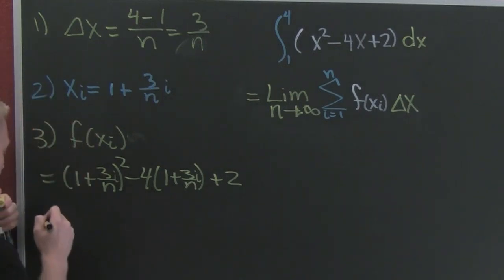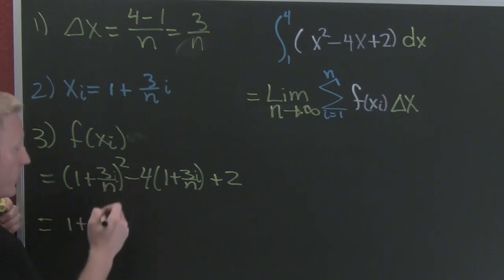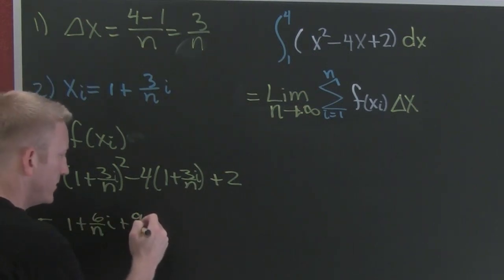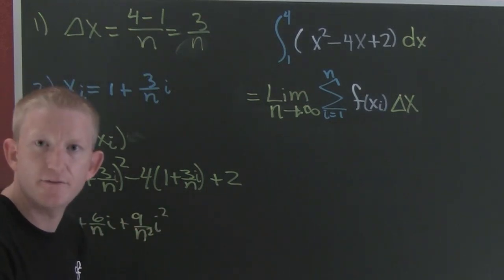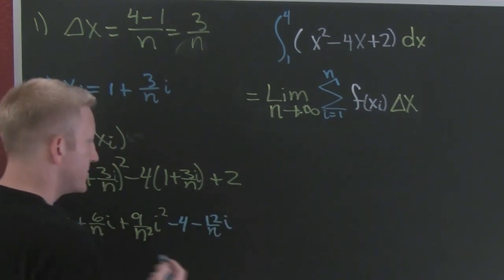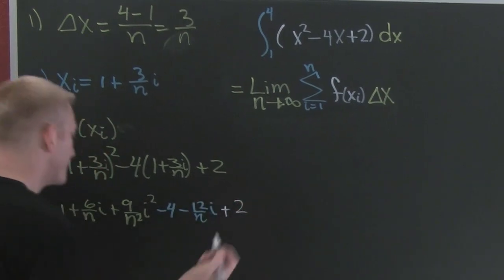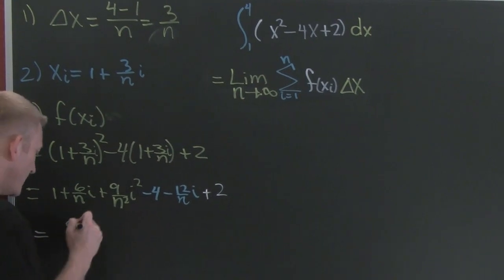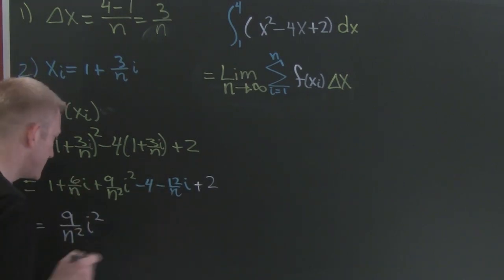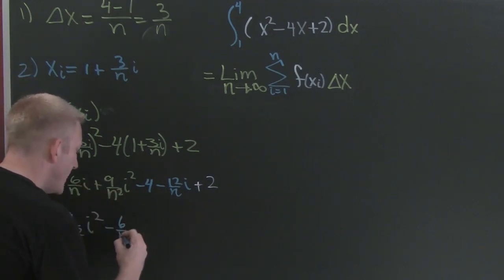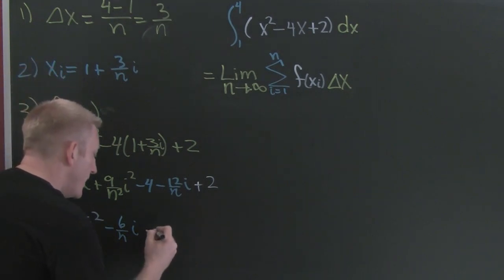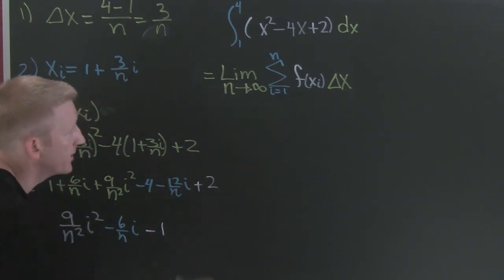Let's clean that up. Expanding the square gives 1 plus 6i/n plus 9i²/n². Now taking care of the 4: that's minus 4 minus 12i/n. Plus 2. Gathering the i² terms, i terms, and constants: we get 9i²/n² minus 6i/n minus 1. And that was our f of xi.